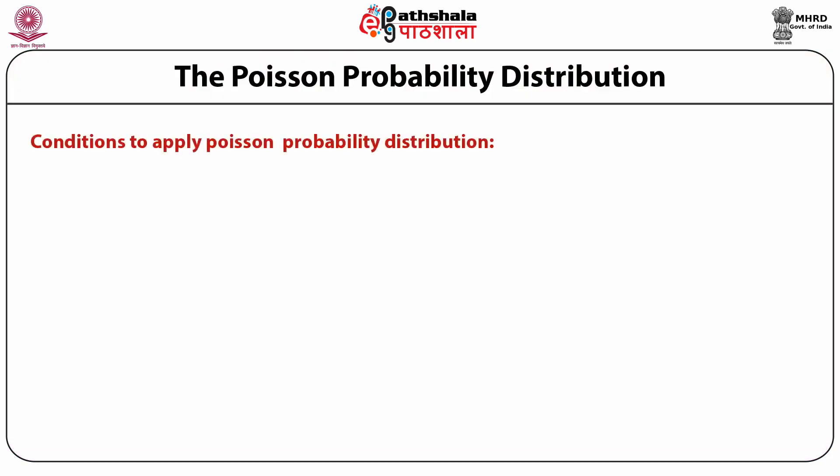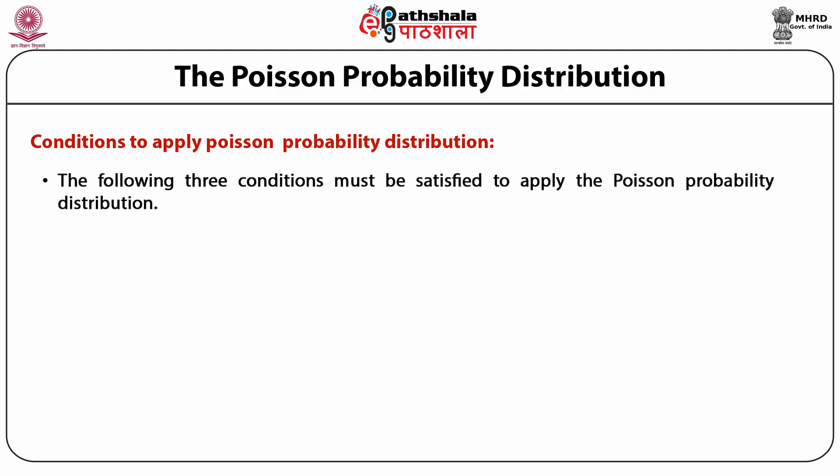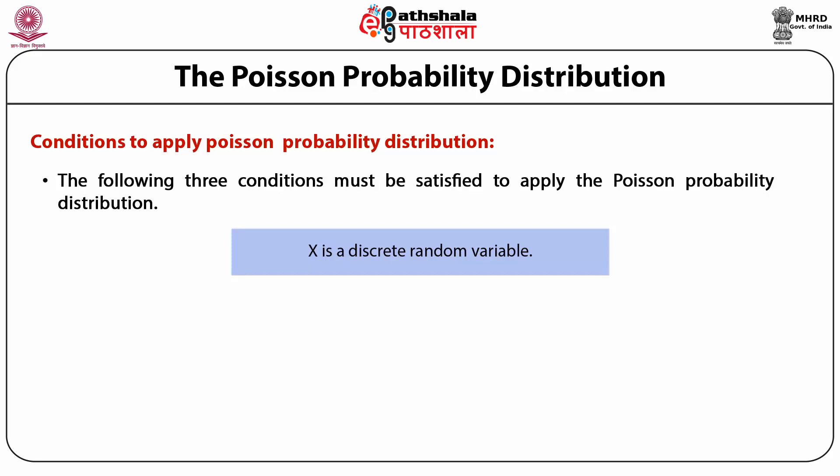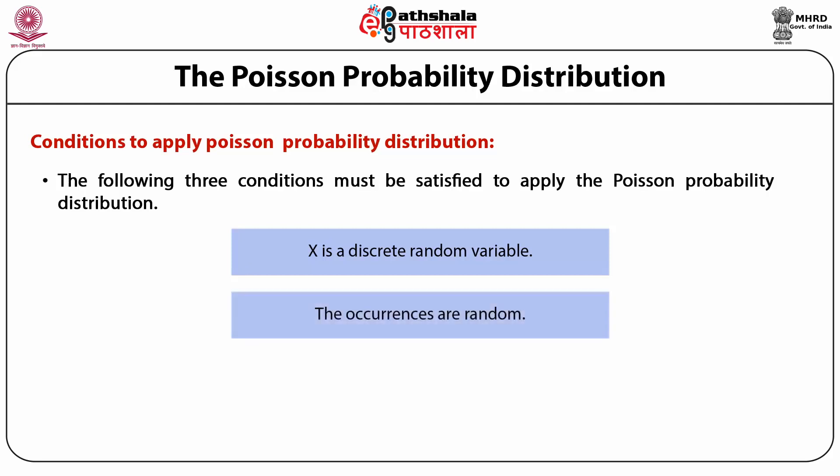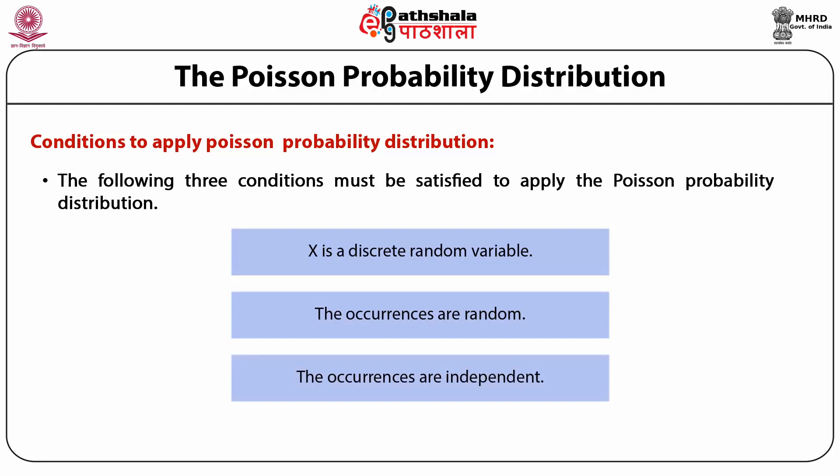Conditions to apply Poisson probability distribution: the following three conditions must be satisfied. Number one, x is a discrete random variable. Number two, the occurrences are random. Number three, the occurrences are independent. The following are a few examples of discrete random variables for which occurrences are random and independent, and hence Poisson probability distribution can be applied.